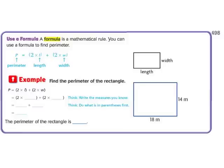Okay, 498 says, use a formula. A formula is a mathematical rule that you can use a formula to find perimeter. And we already talked about this on the other page. P stands for perimeter. Perimeter equals 2 times the length plus 2 times the width. So we're going to practice that here with this rectangle over here.